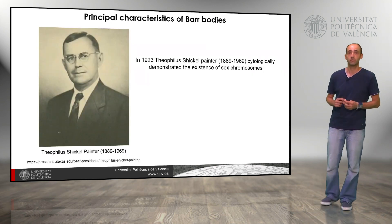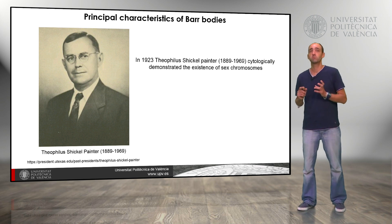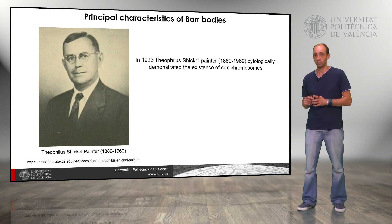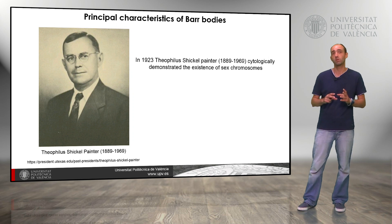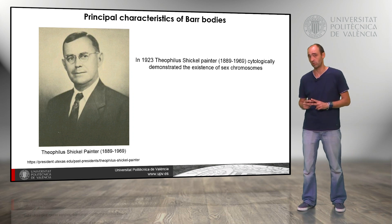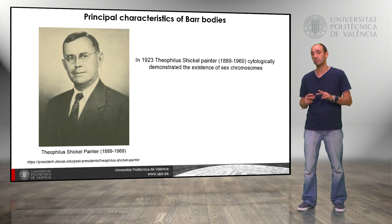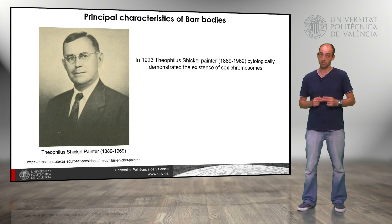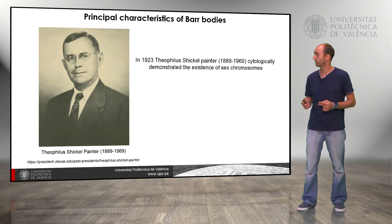In 1923, Theophilus cytologically demonstrated the existence of the sex chromosomes. In human beings we have two different chromosomes: chromosome X and chromosome Y, and these chromosomes determine the sex of the individual. Each X will be female and each Y will be male.